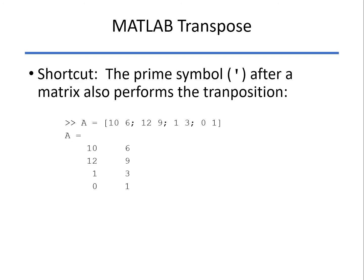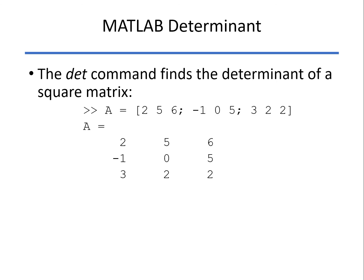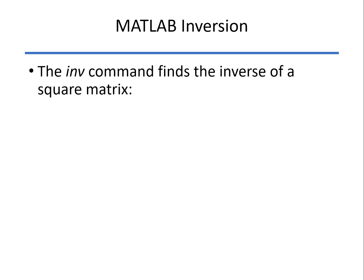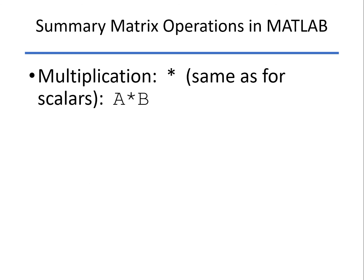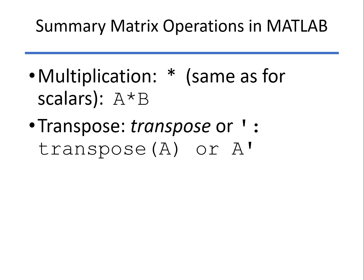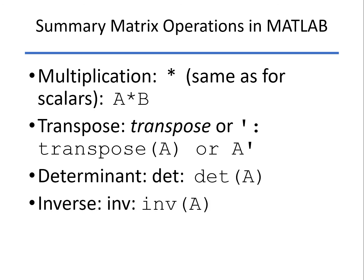There's the matrix A. A prime just switches the rows and the columns. The determinant is DET. And invert, INV. So, pretty straightforward. Multiplication, just the same as the scalar multiplication sign. Transpose, either the transpose command or prime. Determinants, DET, and inverse INV.